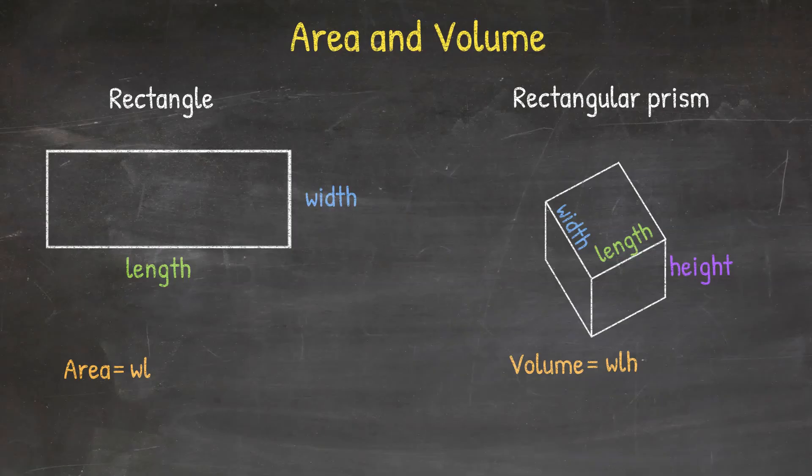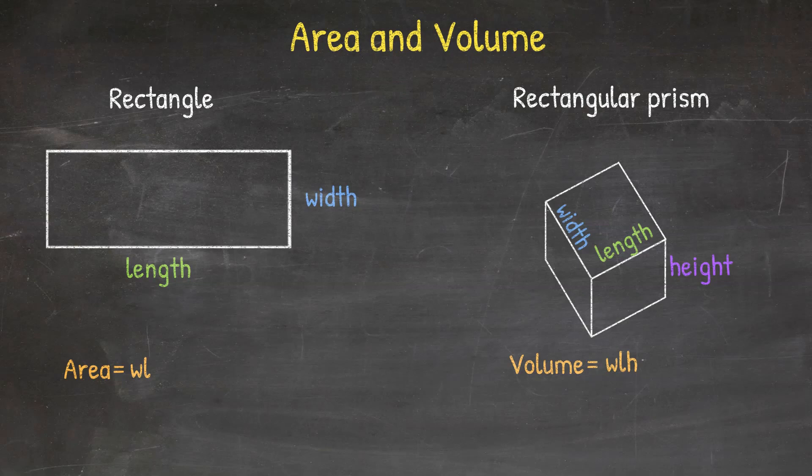The volume of the prism has the same formula from the area, which is width times length, and then the third dimension, height, also needs to be multiplied. So the formula for the volume is width times length times height.